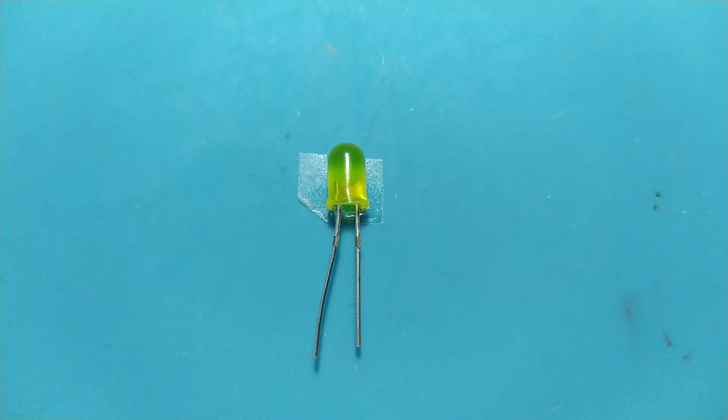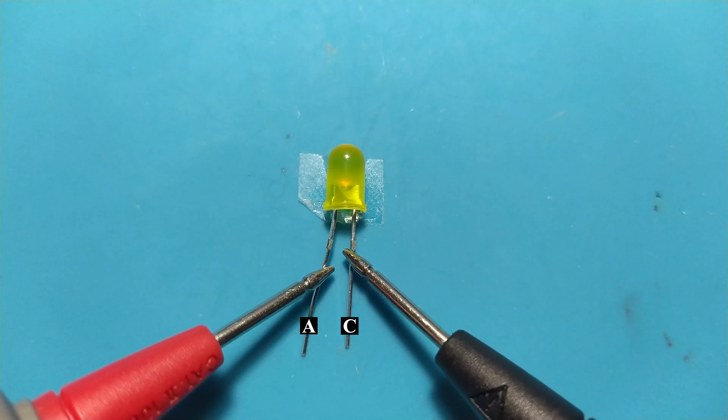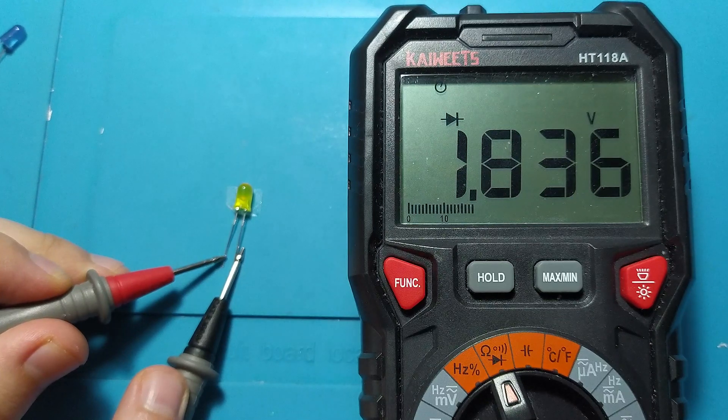Let's repeat the test on a yellow LED. With the red probe on the anode and the black probe on the cathode, the LED will light up and on the screen, you will see a voltage drop of about 1.8 volts on the yellow LED.